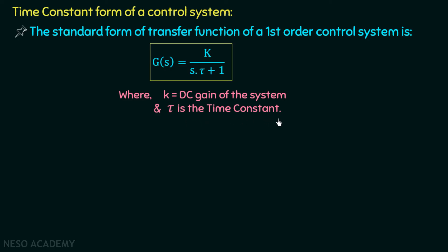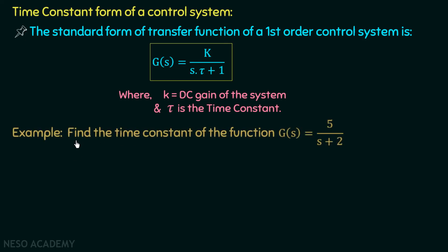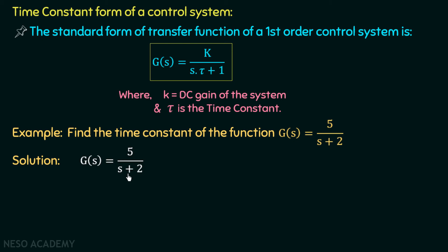Let's understand this with an example. Find the time constant of G(s) = 5/(s+2). We are given this system and need to find the time constant. Moving to the solution: this function is not yet in the standard time constant form G(s) = k/(s*tau + 1).